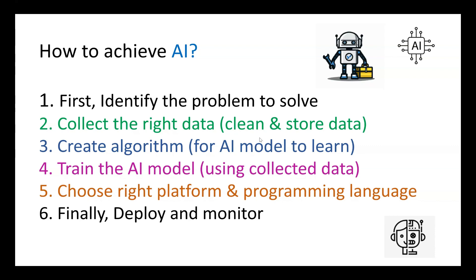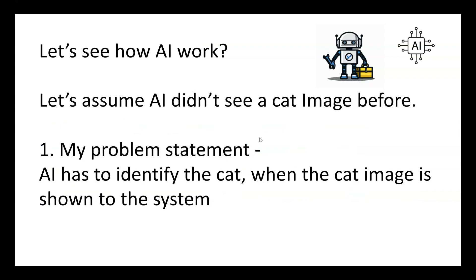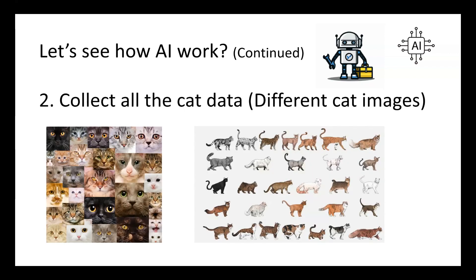Now we know the steps to achieve AI — let's see how AI works. Let's assume AI has not seen a cat image before. Here we want to train an AI model to identify a cat. The problem statement is: AI has to identify a cat when a cat image is shown to the system. To achieve this, collect all the cat data — different cat images. The complete characteristics of the cat, such as face, body, and each part, should be given as input so you can get accurate results.